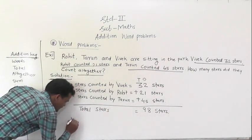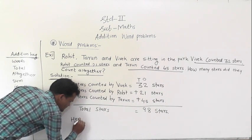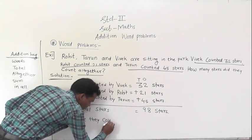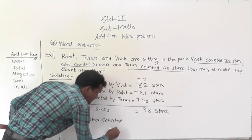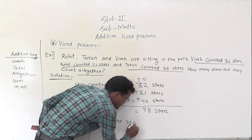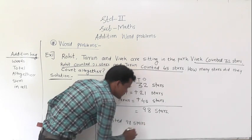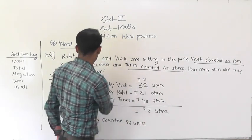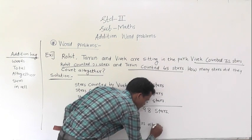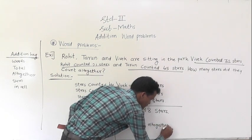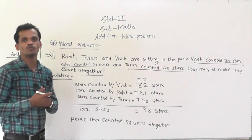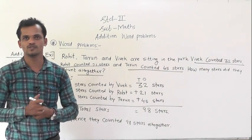Total stars is equal to 98 stars. Write the last statement: Hence, they counted 98 stars altogether. In this way, you have to solve the word problems.